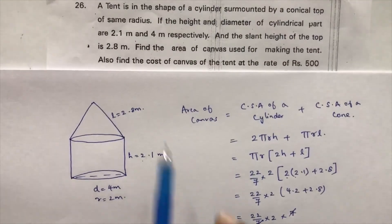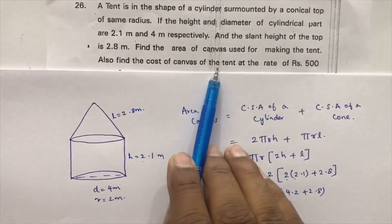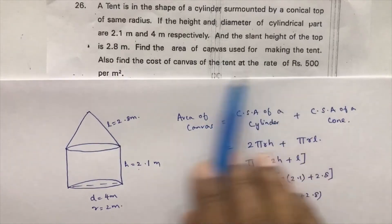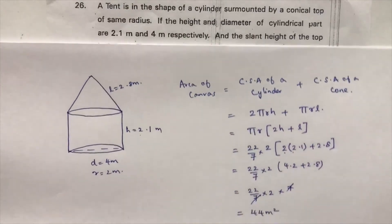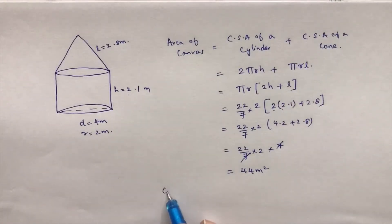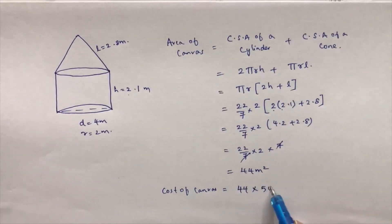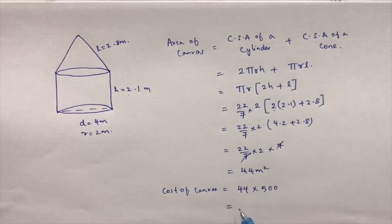At the end they are also asking to find the cost of canvas of the tent at the rate of Rs. 500 per meter square. So if you want to calculate cost of canvas, Rs. 500 per meter square, here it will be 44 into 500.